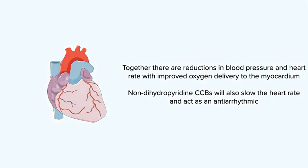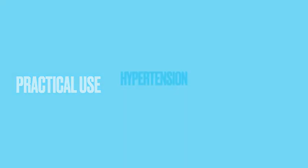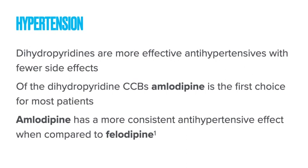I'm now going to move on to how to use these drugs in your day-to-day practice and translate the pharmacology we've discussed into real-life situations. First, hypertension. Dihydropyridines are far more effective as antihypertensives and generally have fewer side effects. Of all the dihydropyridines, amlodipine is generally the first choice. It has a much more consistent antihypertensive effect when compared with felodipine, so that's generally where I start.